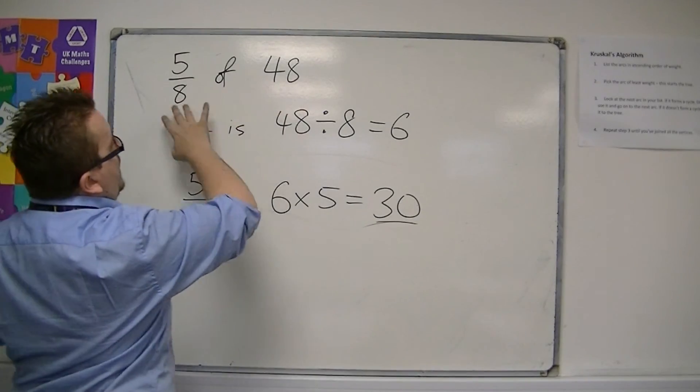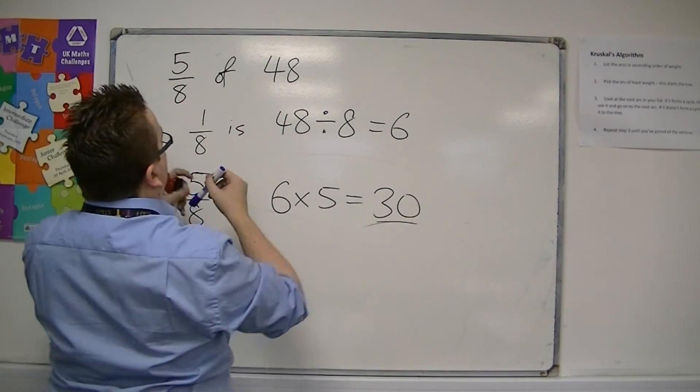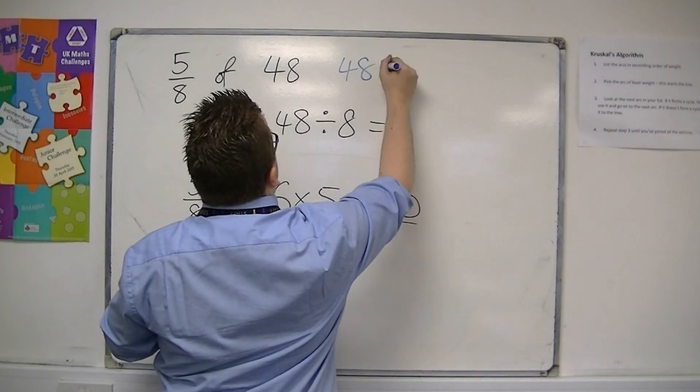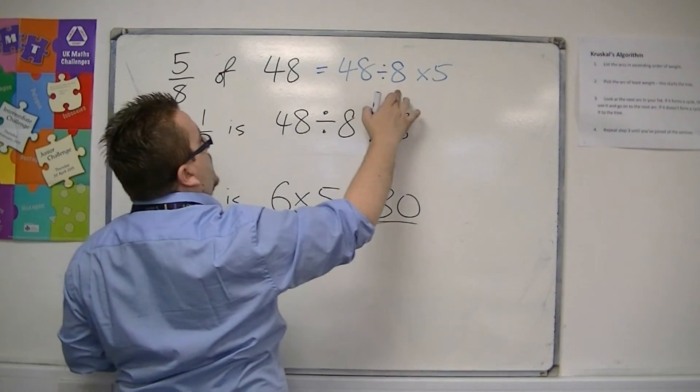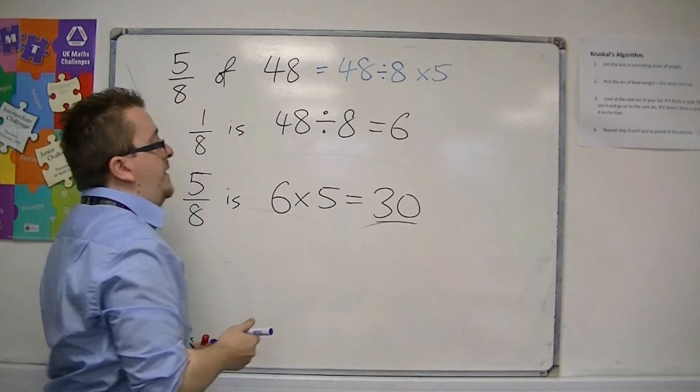Divide 48 by eight, so divide by the bottom, times by the top. So 48 divided by eight is six, times five is 30.